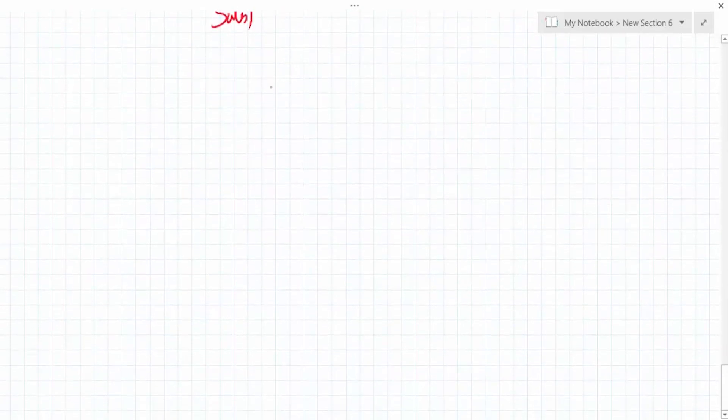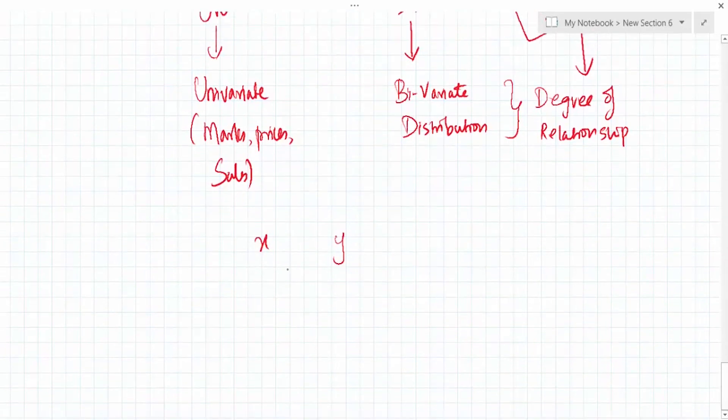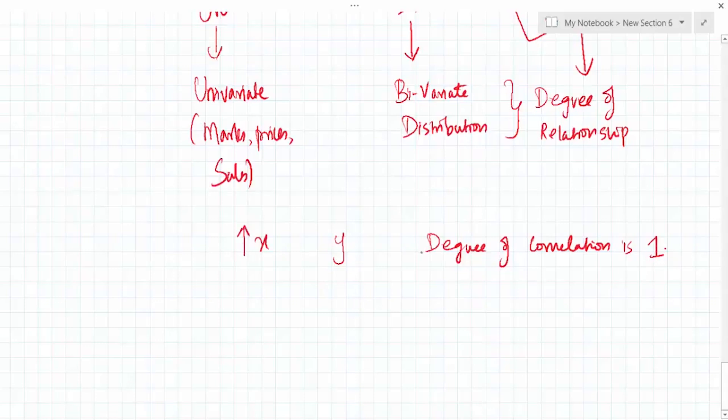Let's say there are two variables, X and Y. Now these two variables have a degree of correlation. Let's say the degree of correlation is one. When I say the degree of correlation is one, it means both the variables are very closely correlated. They have a very close relationship. If variable X increases by a certain value, variable Y will also increase.